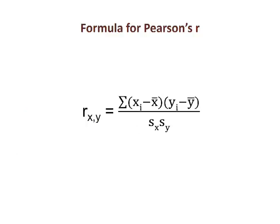Let's look at the underlying math to understand how the statistic is constructed. Here is the formula for R. The numerator is called the covariance. It is the distance of each point of the x variable from its mean multiplied by the distance of each point of the y variable from its mean. The sum is not based on squares, so the numerator can be positive or negative.